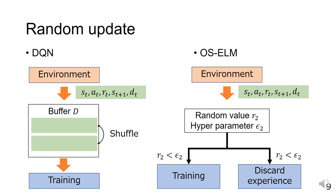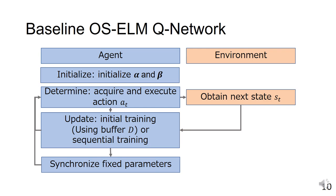Once again, this slide shows the baseline OS-ELM Q-Network. The baseline OS-ELM Q-Network is composed of three operations: initialize, determine, and update.